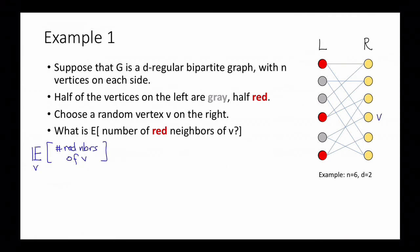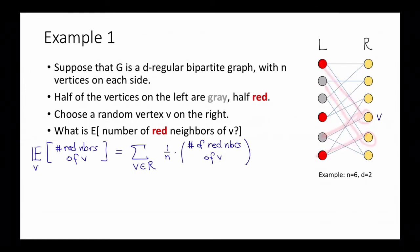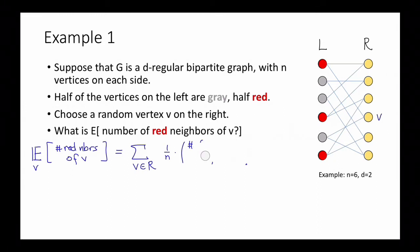We can write down the expected number of red neighbors of V. By definition, this is the sum over all vertices V on the right-hand side of (1/N) times the number of red neighbors of V. But at first glance, it might not be entirely obvious how to analyze this — I'd just have to go through every single vertex V and figure out the count, which does not seem like a particularly scalable solution. So instead, we're not going to do that.